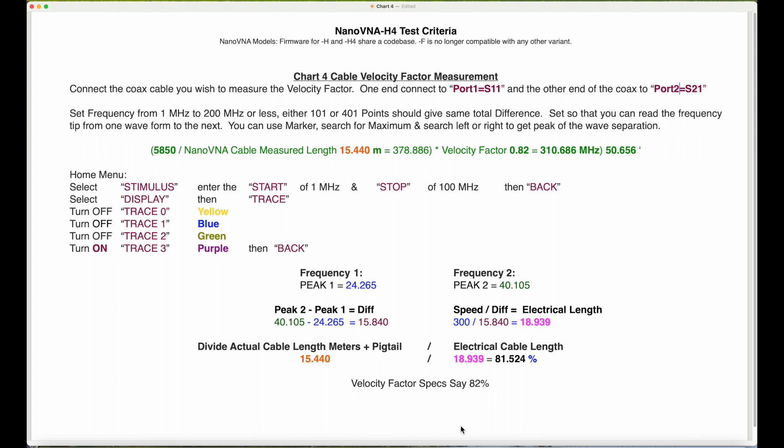And the last step: your actual coax length. In my case it's 15.440, it included the pigtails. You divide that by 18.939 and you will get 81.524.